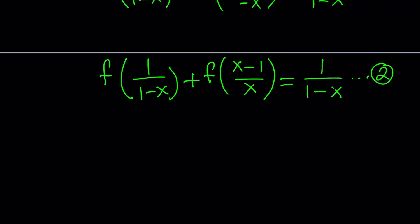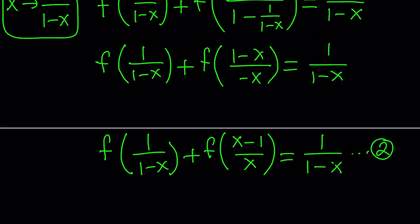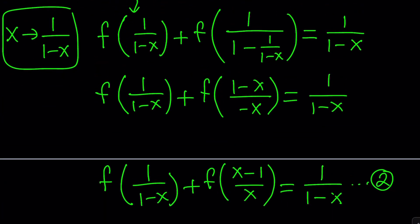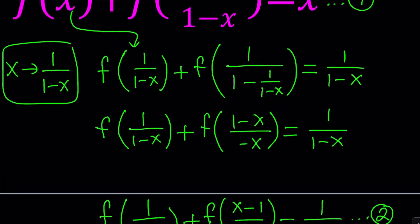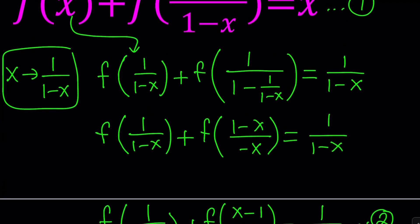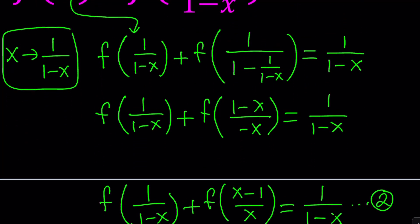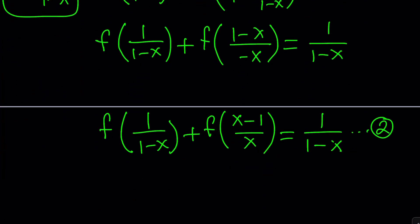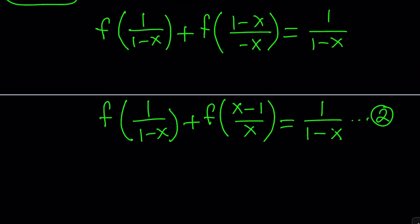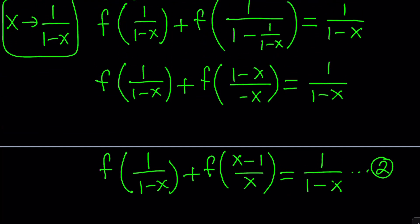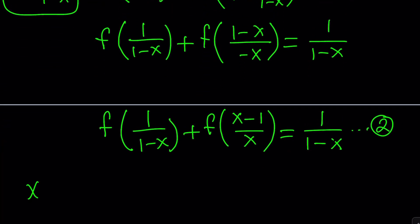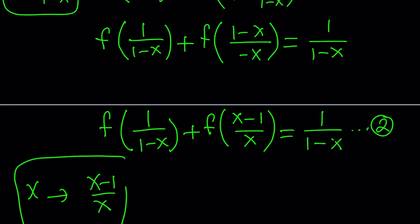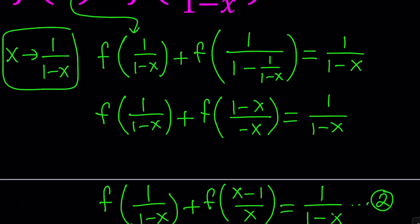I do need another equation because notice I have three different function arguments so far: x, 1 over 1 minus x, and x minus 1 over x. You probably guessed it — I'm going to replace x with x minus 1 over x next, because that's what I need to do. Let's see what happens with that.